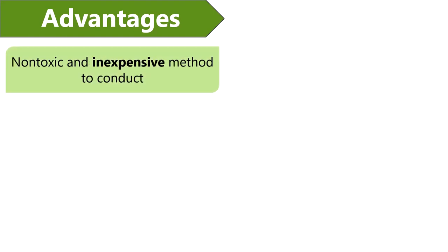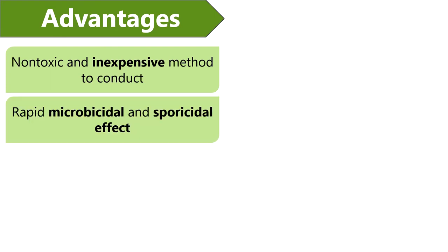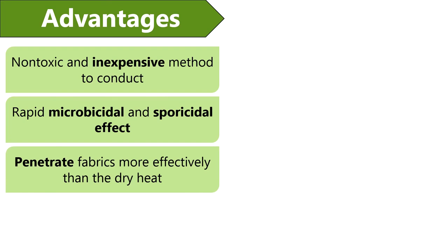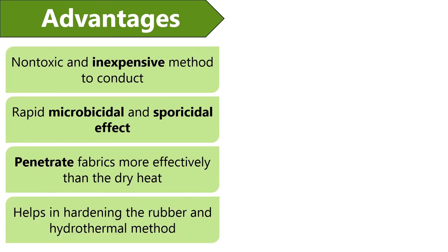Starting with advantages: an autoclave is a non-toxic method that does not produce toxic fumes and only uses water. It is also an inexpensive method to conduct, as its operation and maintenance is quite easy. An autoclave sterilizer is not only effective in destroying microbial cells but also microbial spores. Moist heat penetrates fabrics more effectively than dry heat. In chemical industries, autoclaves are extensively used in hardening rubber and also in the hydrothermal method to produce different chemical compounds.